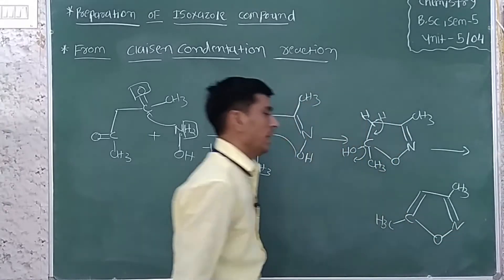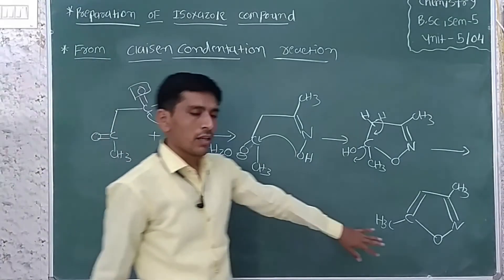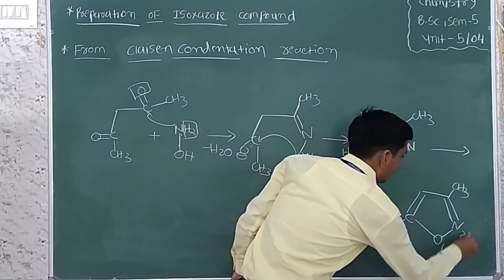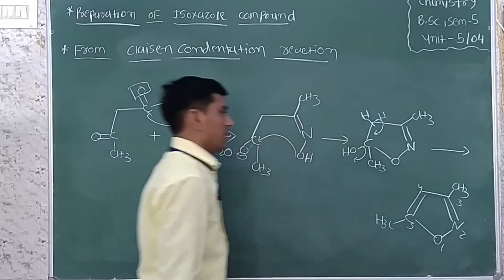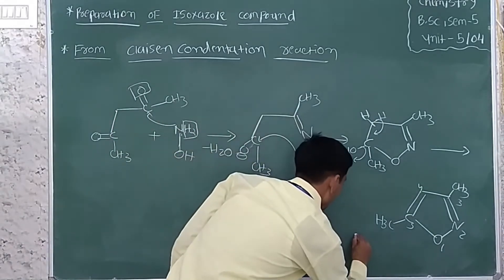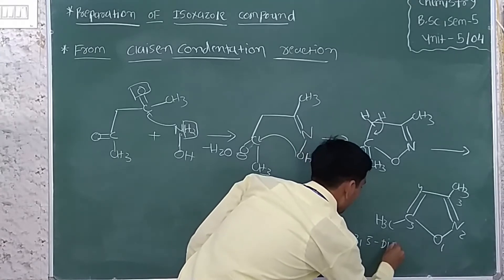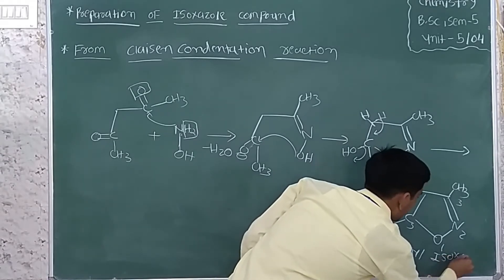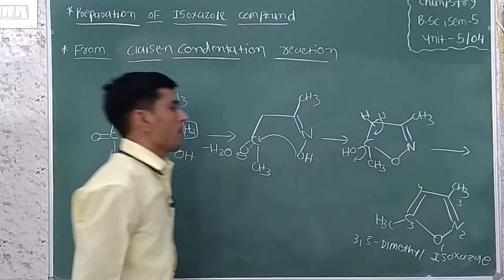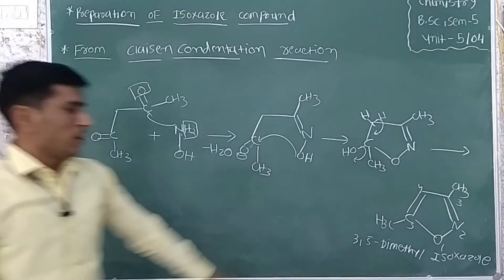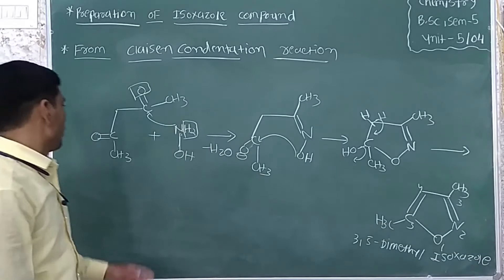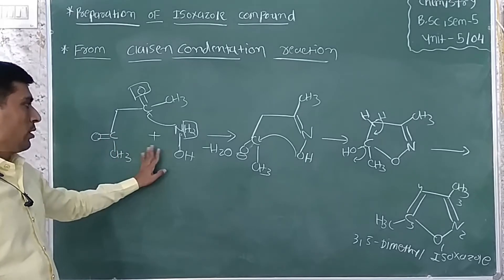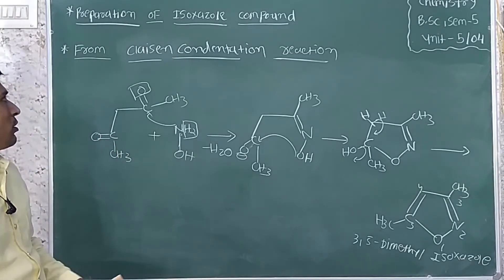This gives preparation of our final isoxazole compound. Its name is 3,5-dimethyl isoxazole, prepared from 1,3-pentanedione plus hydroxylamine.